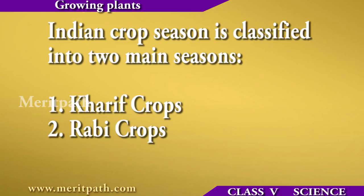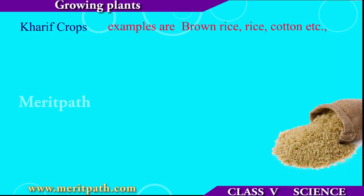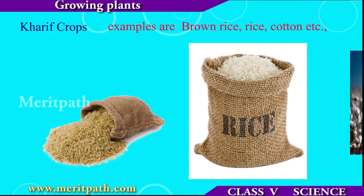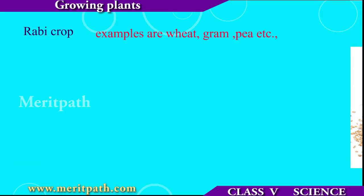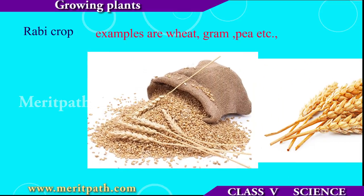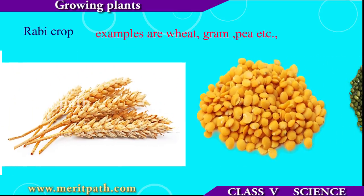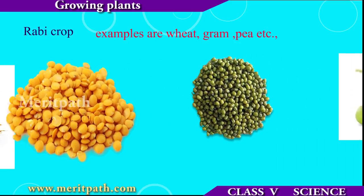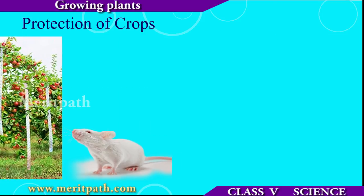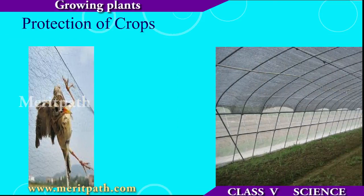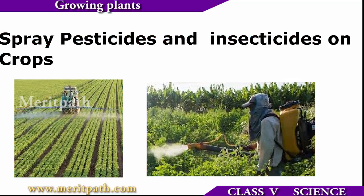Indian crop seasons are classified into two main seasons: Kharif crops and Rabi crops. Kharif crops, also known as monsoon crops, include rice and cotton. Rabi crops are sown in winter and harvested in the spring season — examples are wheat, gram and mustard. Crops should be protected from animals, and pesticides and insecticides should be sprayed for the protection of crops.